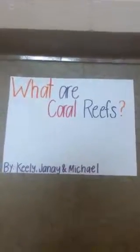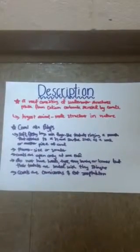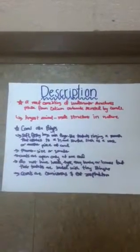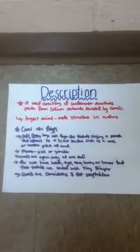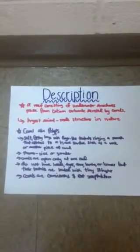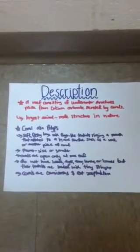What are coral reefs? A coral reef is a reef consisting of underwater structures made from calcium carbonate secreted by corals. Corals are carnivorous and eat zooplankton.